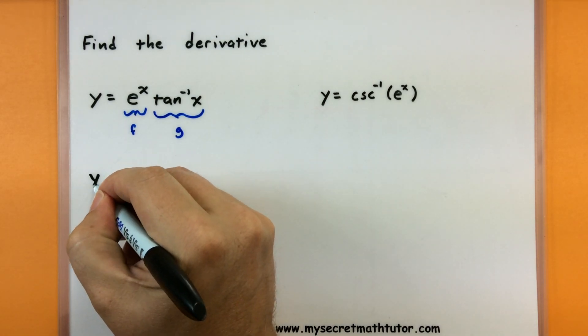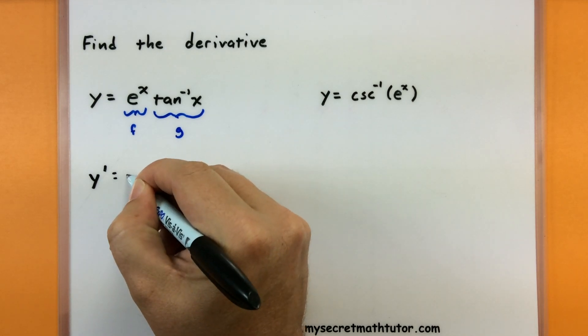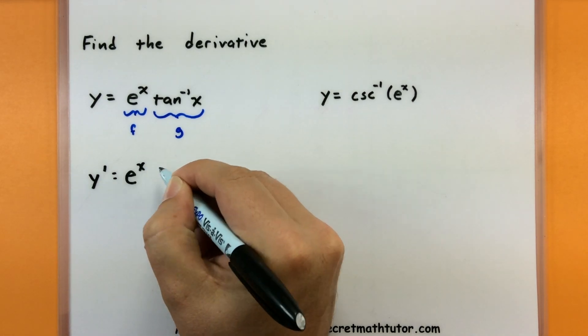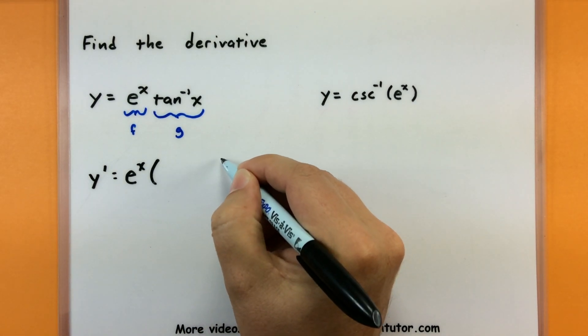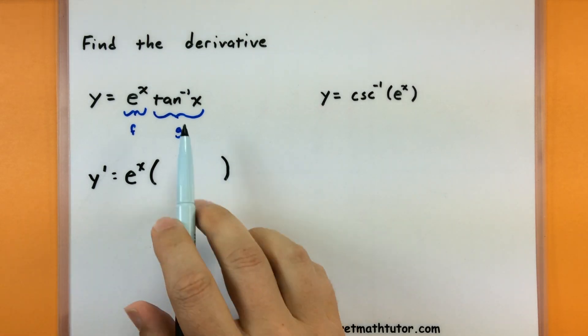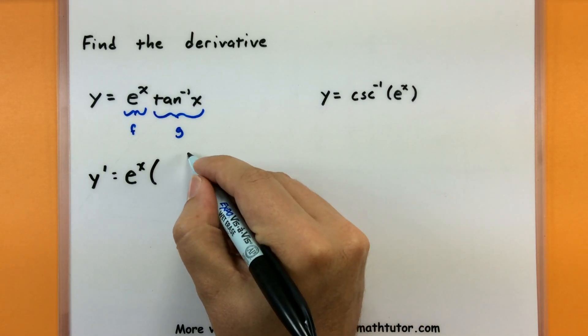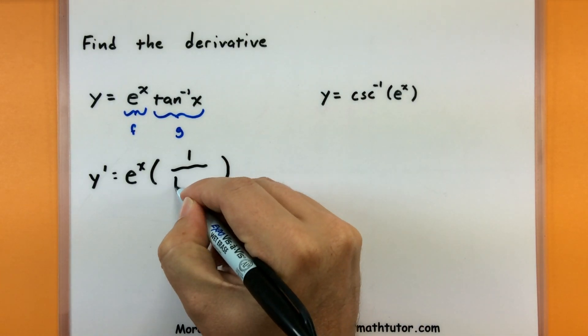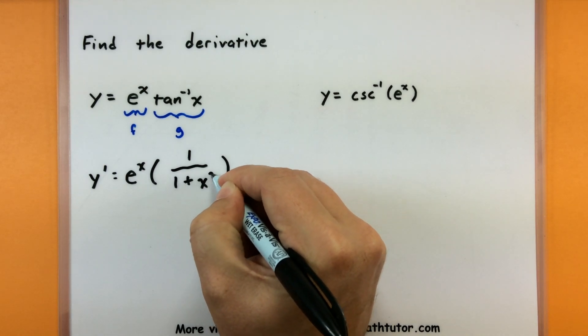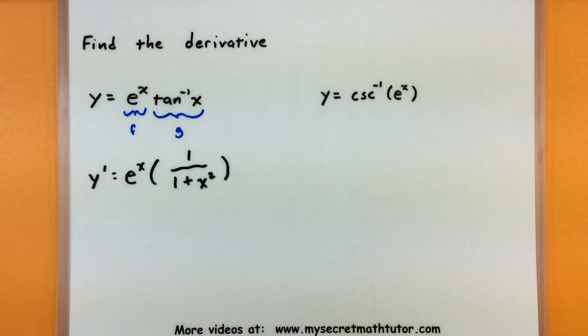Using our product rule then, we'll say that it is our first function, just as it is, no changes, multiplied by the derivative of the second function. So I need the derivative of inverse tangent. Okay, we've seen this on our rule sheet. It's kind of a nice one, actually, because this is one that doesn't involve any square roots. It's just 1 divided by 1 plus x squared.